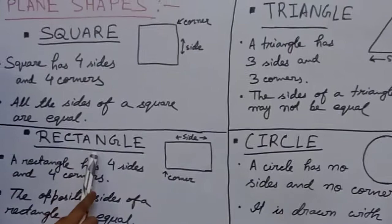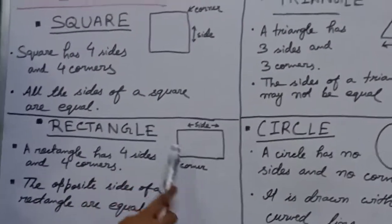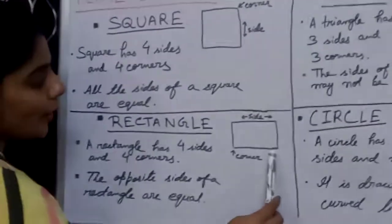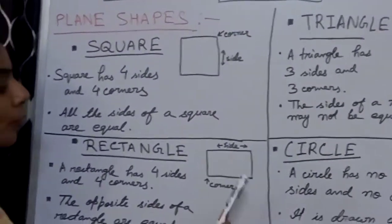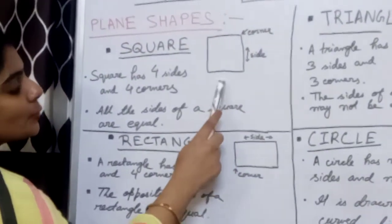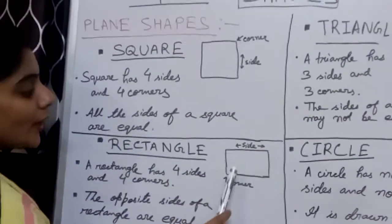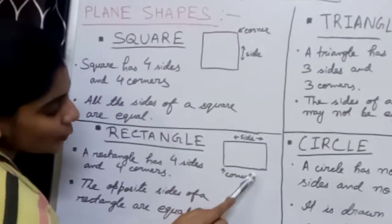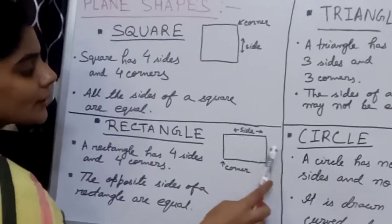Next plane shape is rectangle. Rectangle also has four sides and four corners — one, two, three, four. But there is a difference between square and rectangle. Square has all sides equal, whereas in a rectangle the opposite sides are equal. You can see this side is equal to this side, and this side is equal to this side.